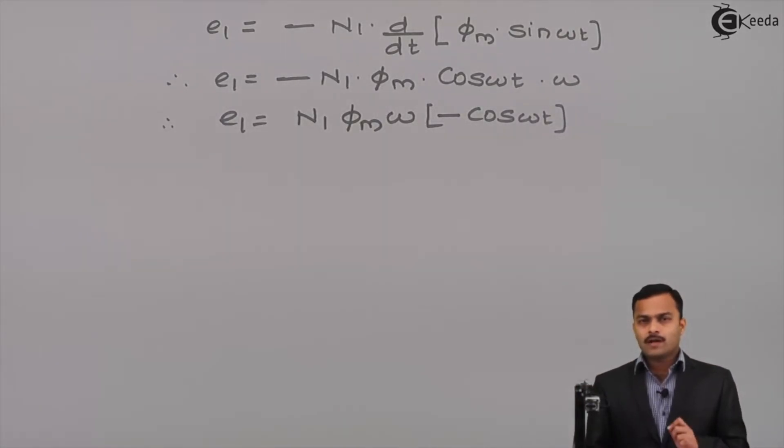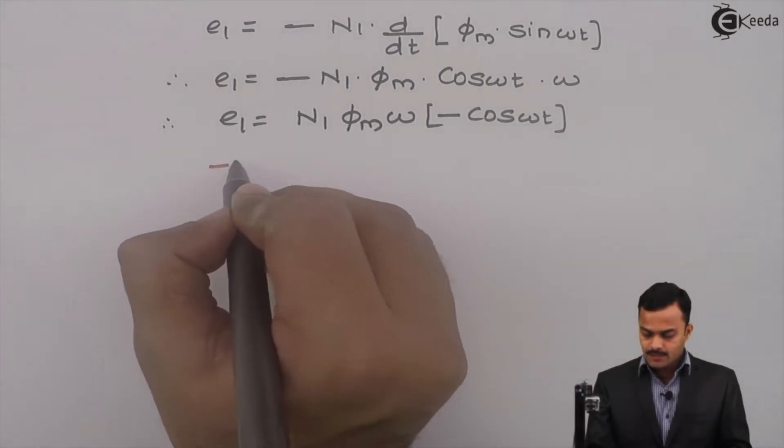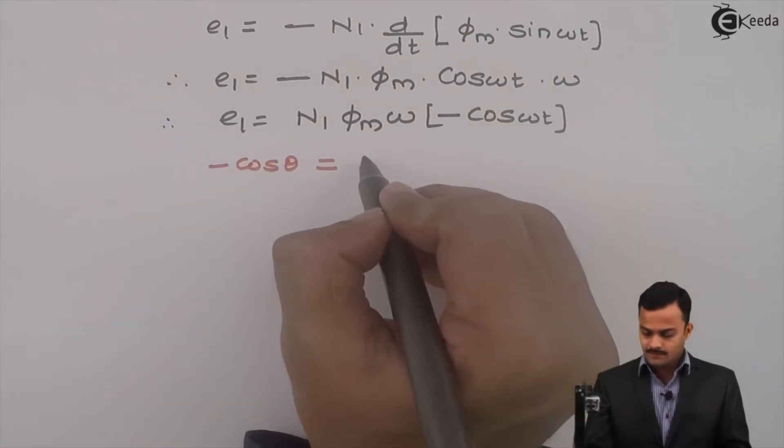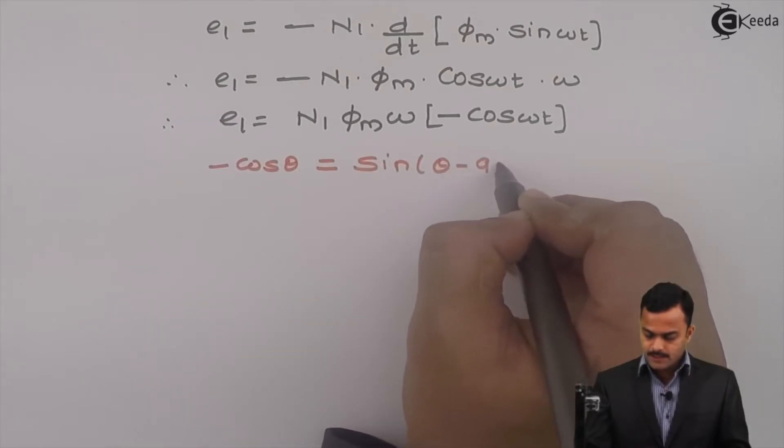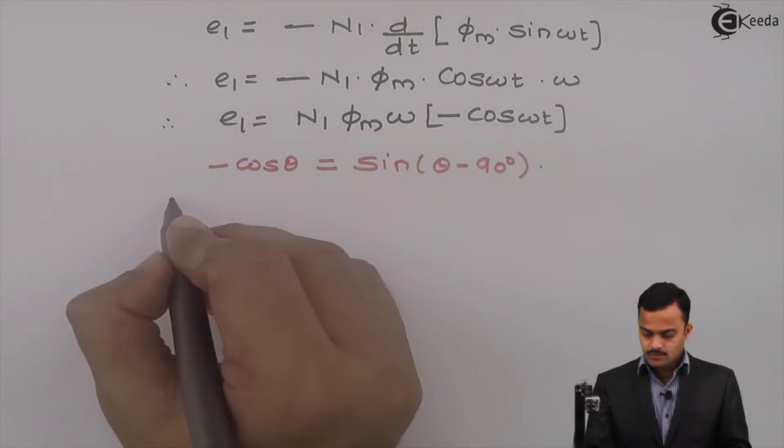I want to write the equation of E1 in terms of standard sinusoidal equation. For that purpose, this minus cos theta is replaced with sin theta minus 90 degrees. Theta means omega t over here.